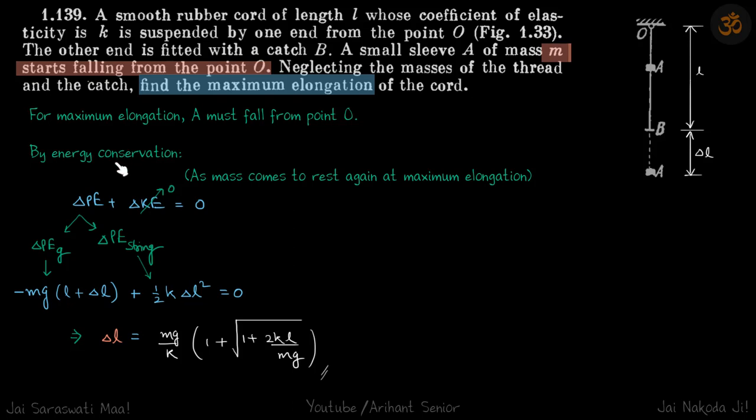By energy conservation, we can say delta PE plus delta KE is equal to zero. And delta KE is zero as the mass comes to rest again at maximum elongation. Delta PE is delta PE due to gravity and delta PE due to the string.